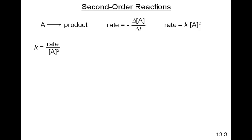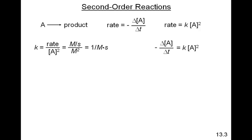K is equal to the rate divided by A squared. So rate being molarity per second, divided by molarity squared — because of the exponent 2 — the units of a second order reaction are 1 over molarity per second, or molarity to the minus 1, seconds to the minus 1.